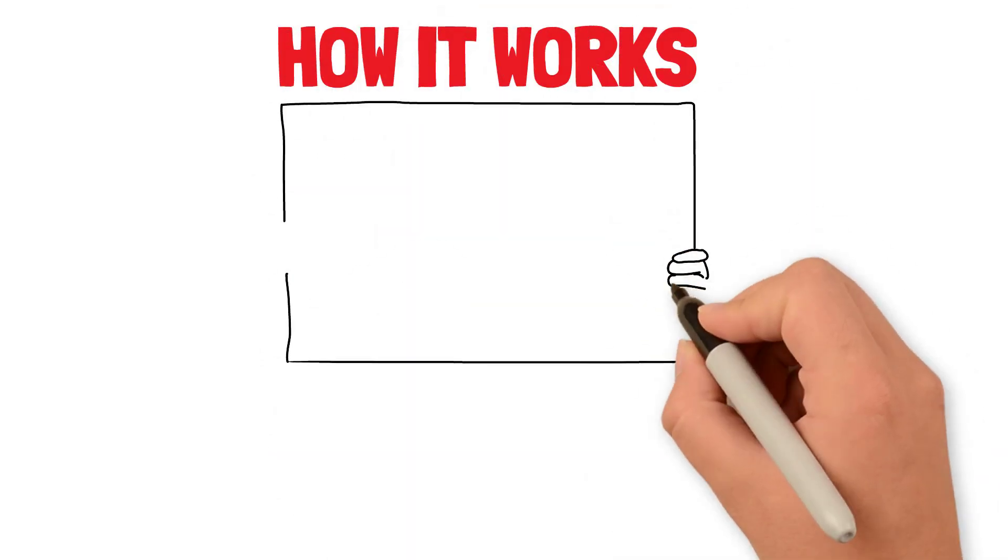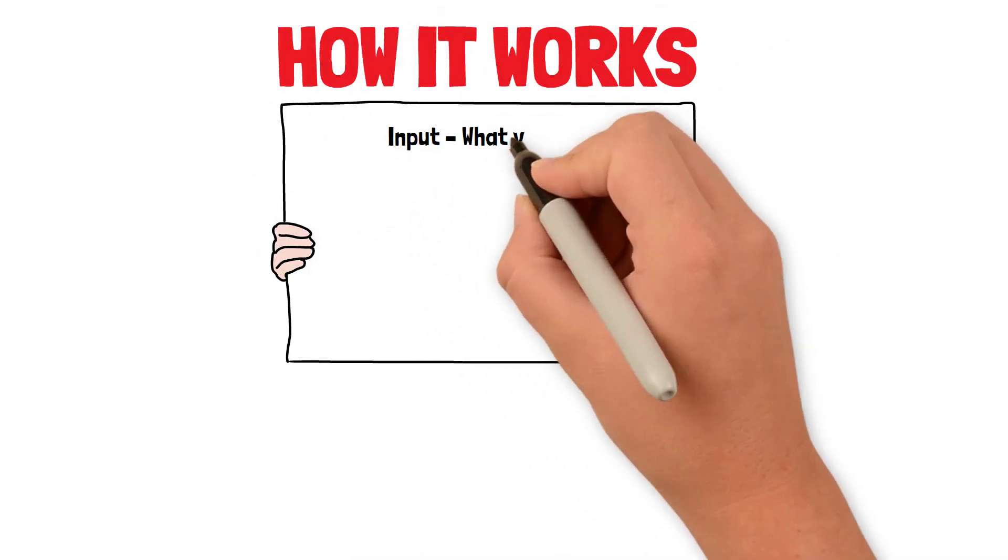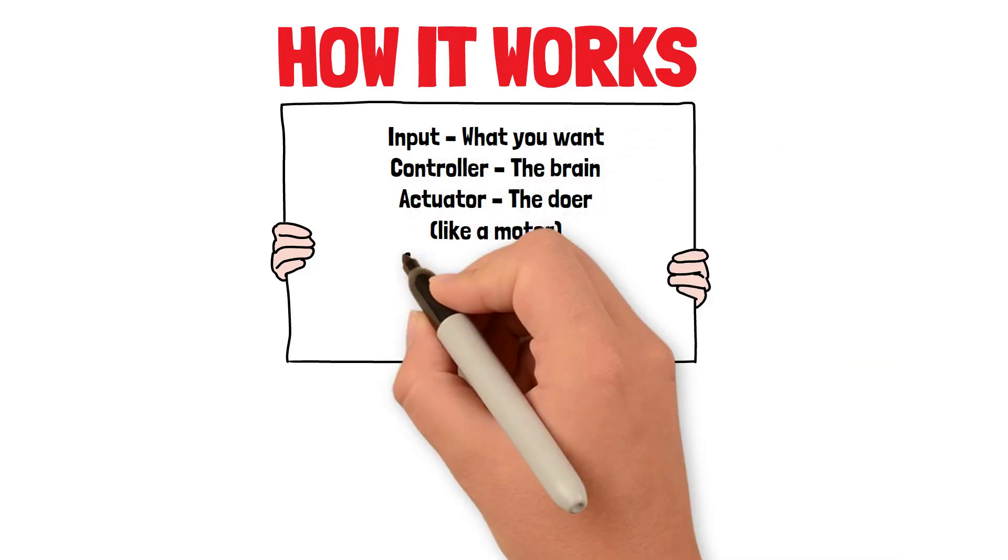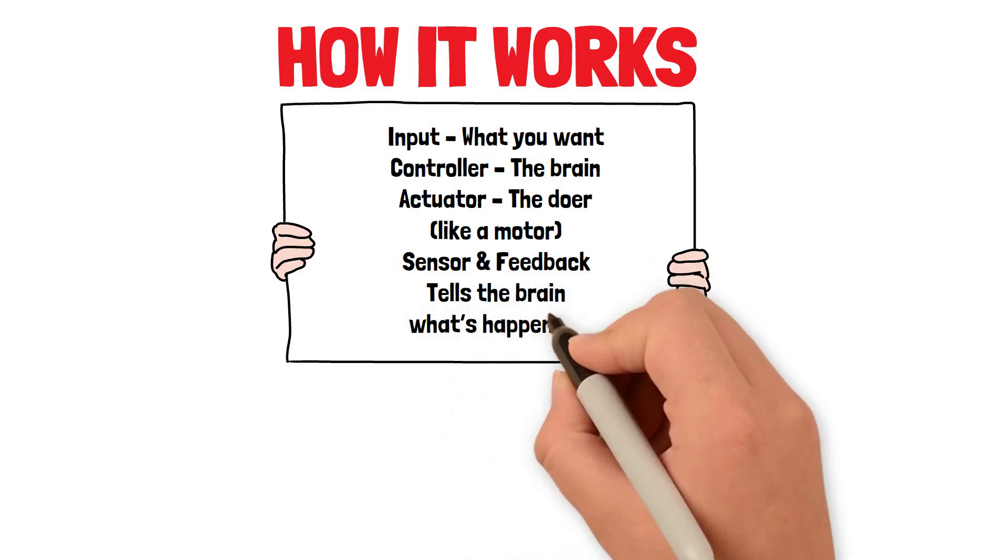How it works. A closed loop control system has four parts. Input: what you want. Controller: the brain. Actuator: the doer, like a motor. Sensor and feedback: tells the brain what's happening.